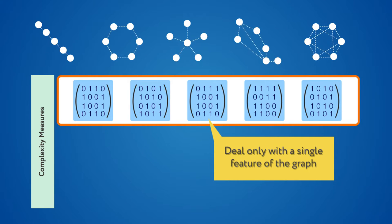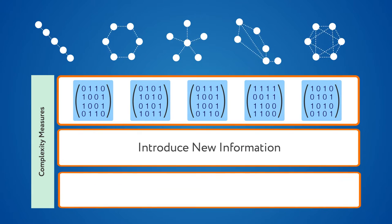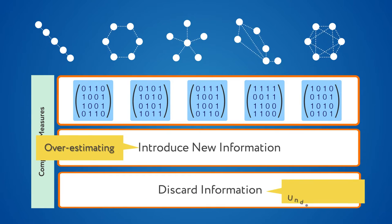and not a full characterization of all its properties. Some of these measures introduce new information not present in the original graph, but most of them discard important information, either overestimating or underestimating graph properties.